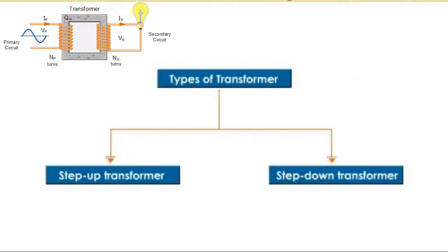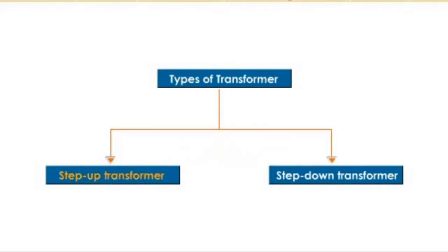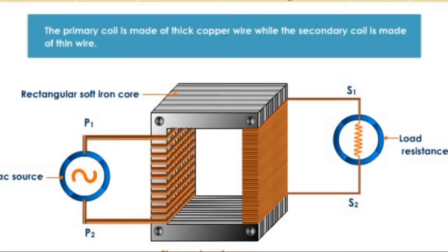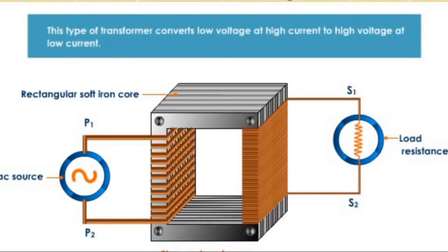There are two types of transformers: Step-Up Transformer and Step-Down Transformer. In a Step-Up Transformer, the number of turns in the secondary coil is greater than the number of turns in the primary coil. The primary coil is made of thick copper wire while the secondary coil is made of thin wire. This type converts low voltage at high current to high voltage at low current.